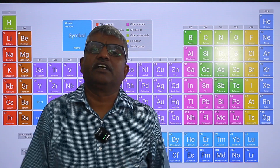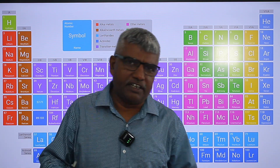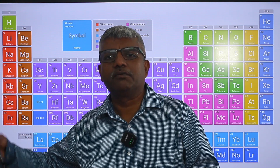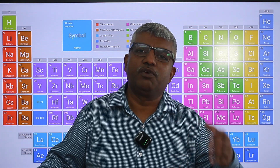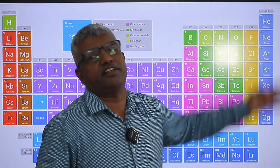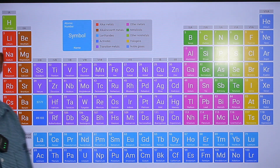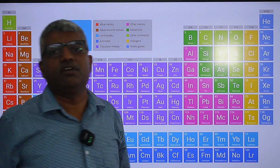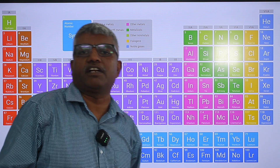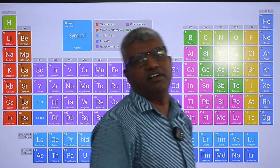Why I coupled electronic configuration and memorization of the periodic table? Both are interrelated. When you are doing electronic configuration you are gradually memorizing, and when you are memorizing you will come to know the electronic configuration. For example, lithium, sodium, potassium, rubidium, cesium, francium are S-1. Helium, neon, argon, krypton, xenon, radon — 1s2 2s2... — filled orbitals.